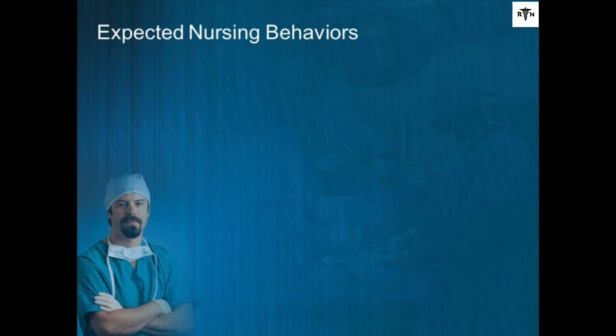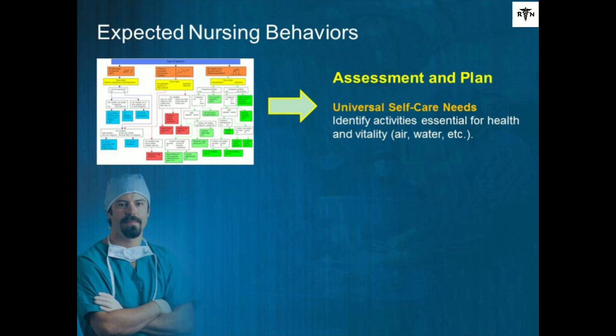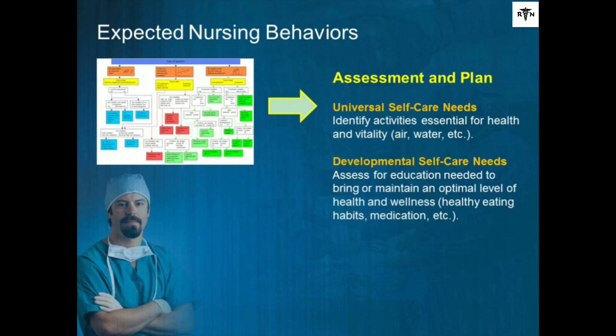Expected nursing behaviors: following the decision tree models based on Orem's theory for a comprehensive assessment and planning process, several self-care models are covered. Universal self-care needs covers identification of activities essential for health, such as intake of air, water, food, elimination processes, and balancing activity and rest, in addition to solitude and socialization. It is also important to assess for threats to well-being and for advancement of human functioning. Developmental self-care needs covers areas such as assessing for education relating to gaining an optimal level of wellness, such as healthier eating habits, medications, and so on.